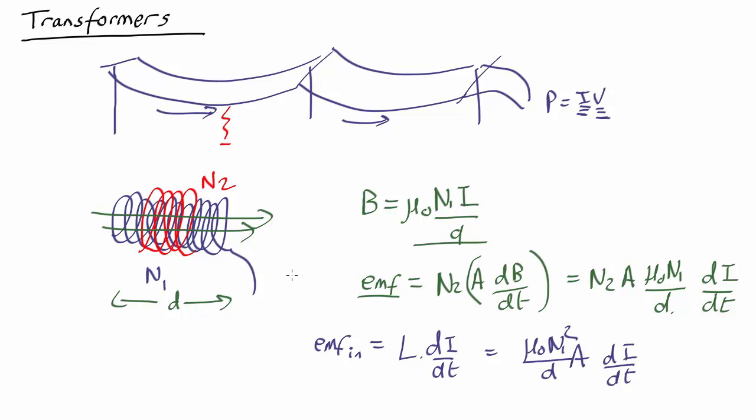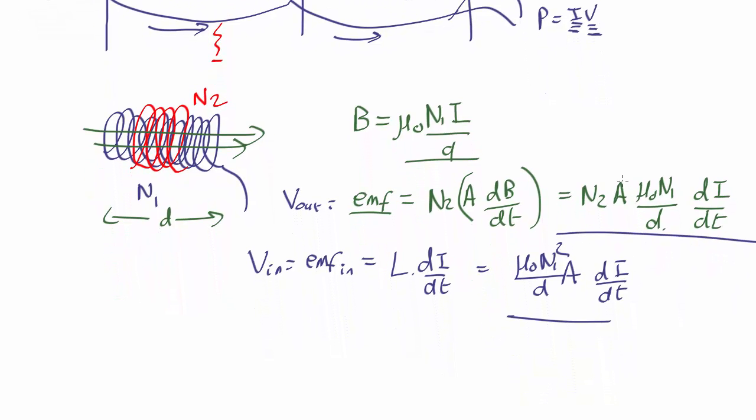So here we have the voltage out, here we have the voltage in, and we can see the two equations look very similar. The only difference is this one has an N1 squared, whereas that one has an N1 times N2. So if we take the voltage out and divide it by the voltage in, almost everything cancels out.